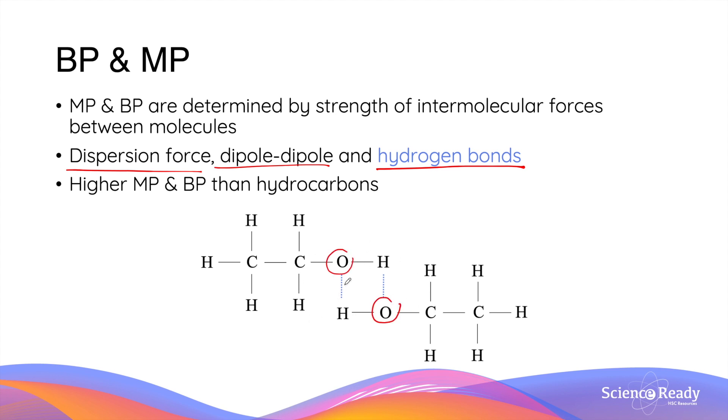In this diagram here, the blue dashed lines illustrate two hydrogen bonds that are being formed between two adjacent ethanol molecules. Due to the fact that alcohols can form more than just dispersion forces, they have higher melting point and boiling point than hydrocarbons.